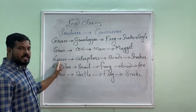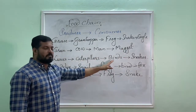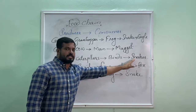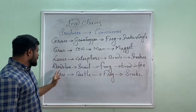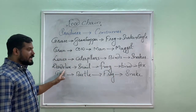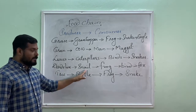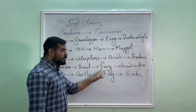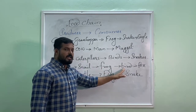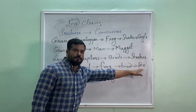Third example: leaves, caterpillar, birds, snakes. Next example: dandelion, snail, frog, bird — here bird means small birds — fox.